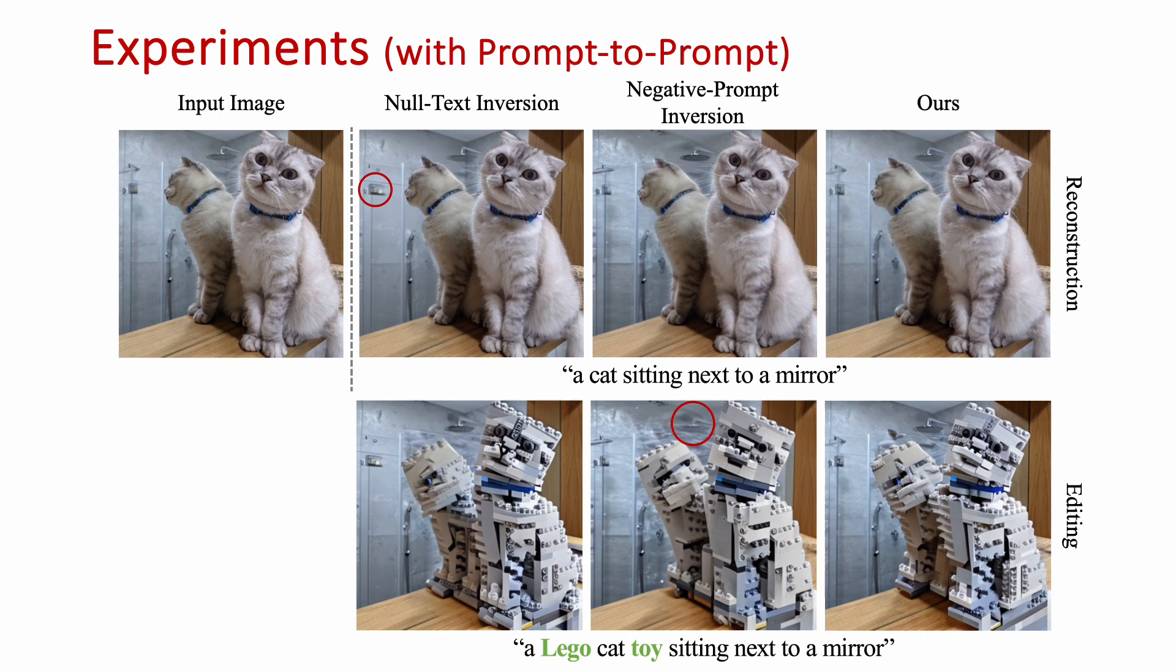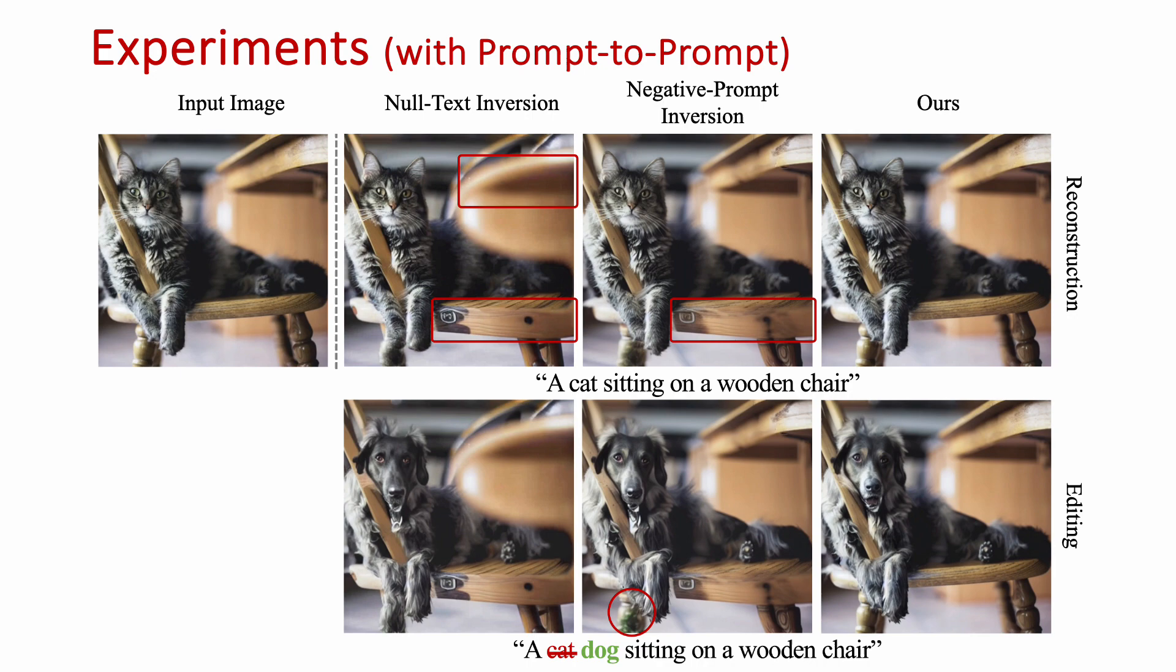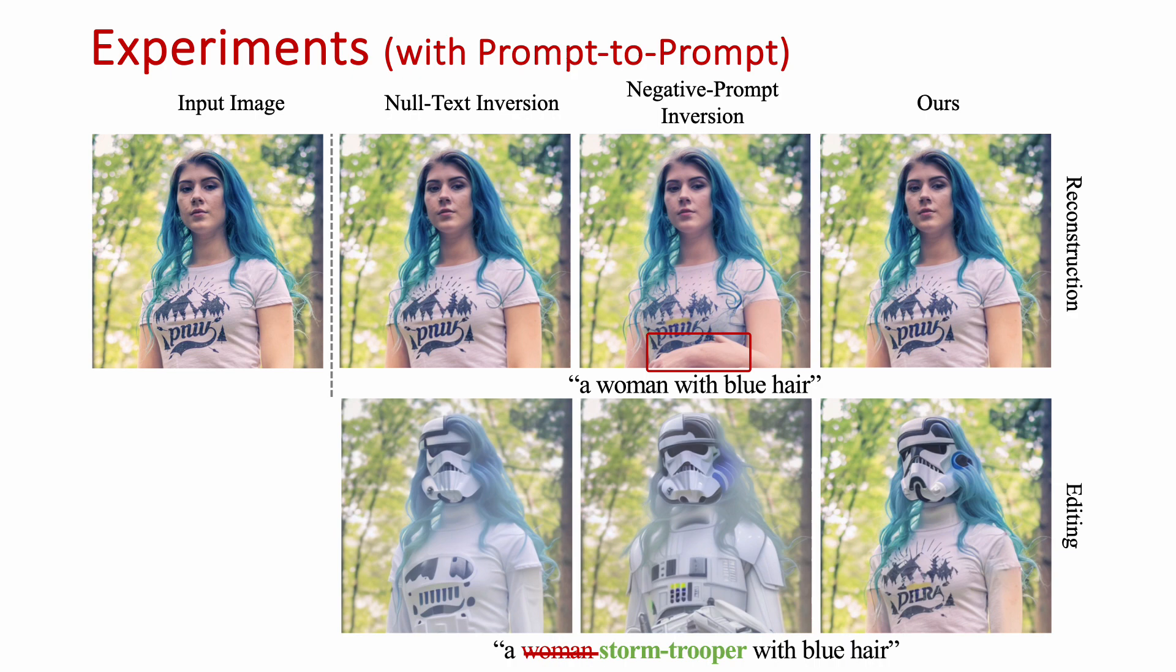Here are some experimental results. The first row shows the reconstruction and the second row shows editing results. We see that we have better preservation of background. We can see, due to imperfect optimization, even null text inversion can cause some unwanted artifact, such as the fork is missing in the second row. And also here, the chair is not correctly reconstructed. We can also see the example here.